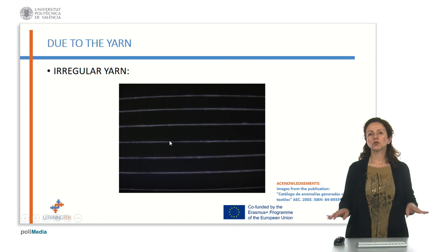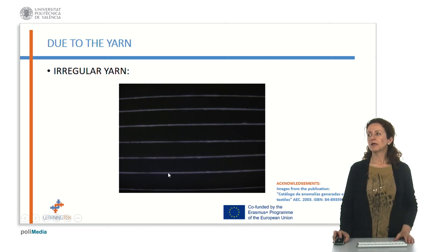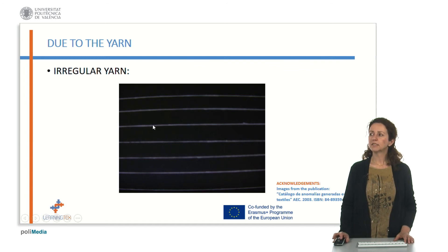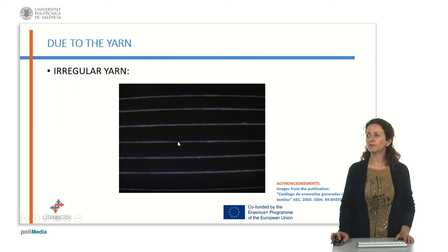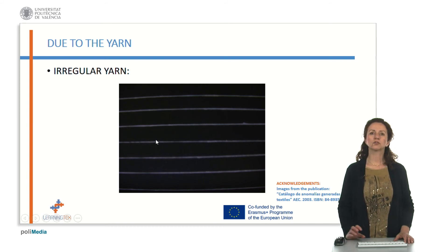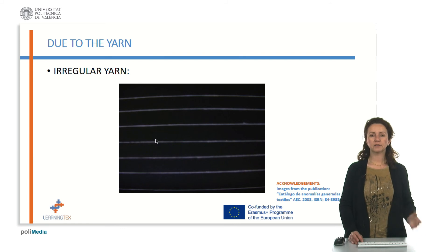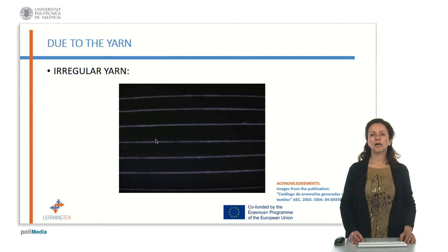So when we join those yarns in the fabric, we would observe that the compactness is higher in the region where we have the fatter part, and it's not as compact when we have the thinner parts. This is going to create a defect and an irregularity in the fabric, which would be a lack of quality in the product.